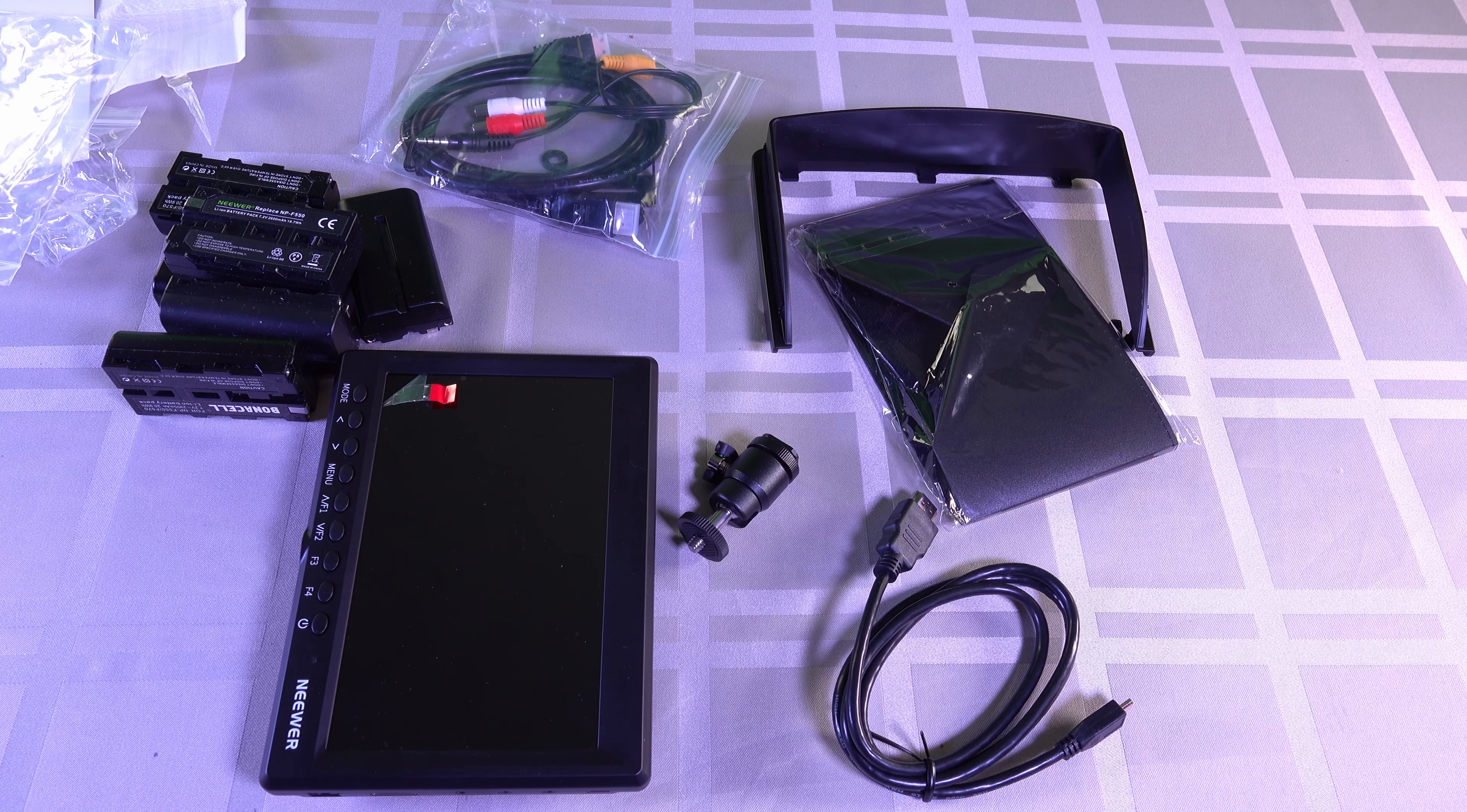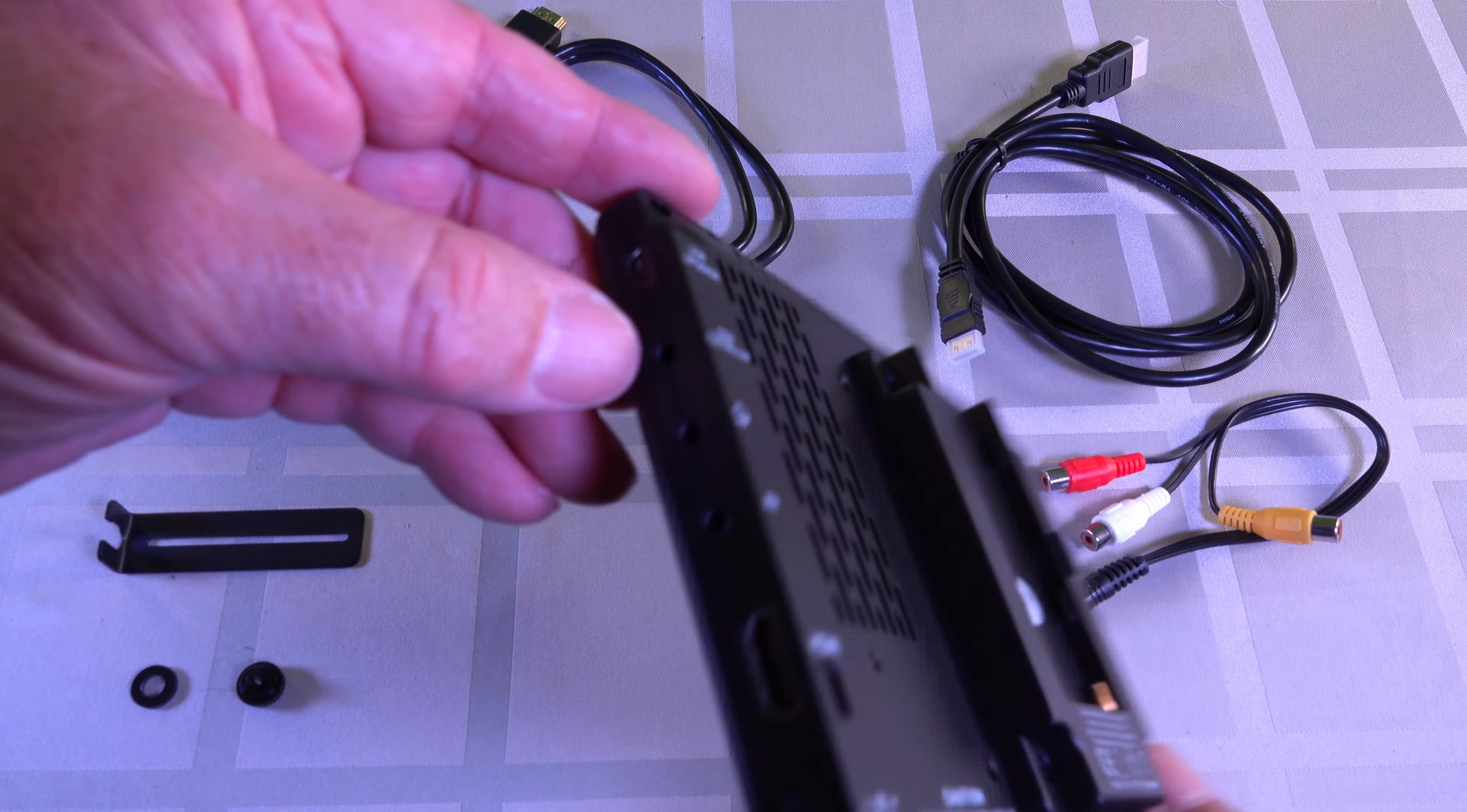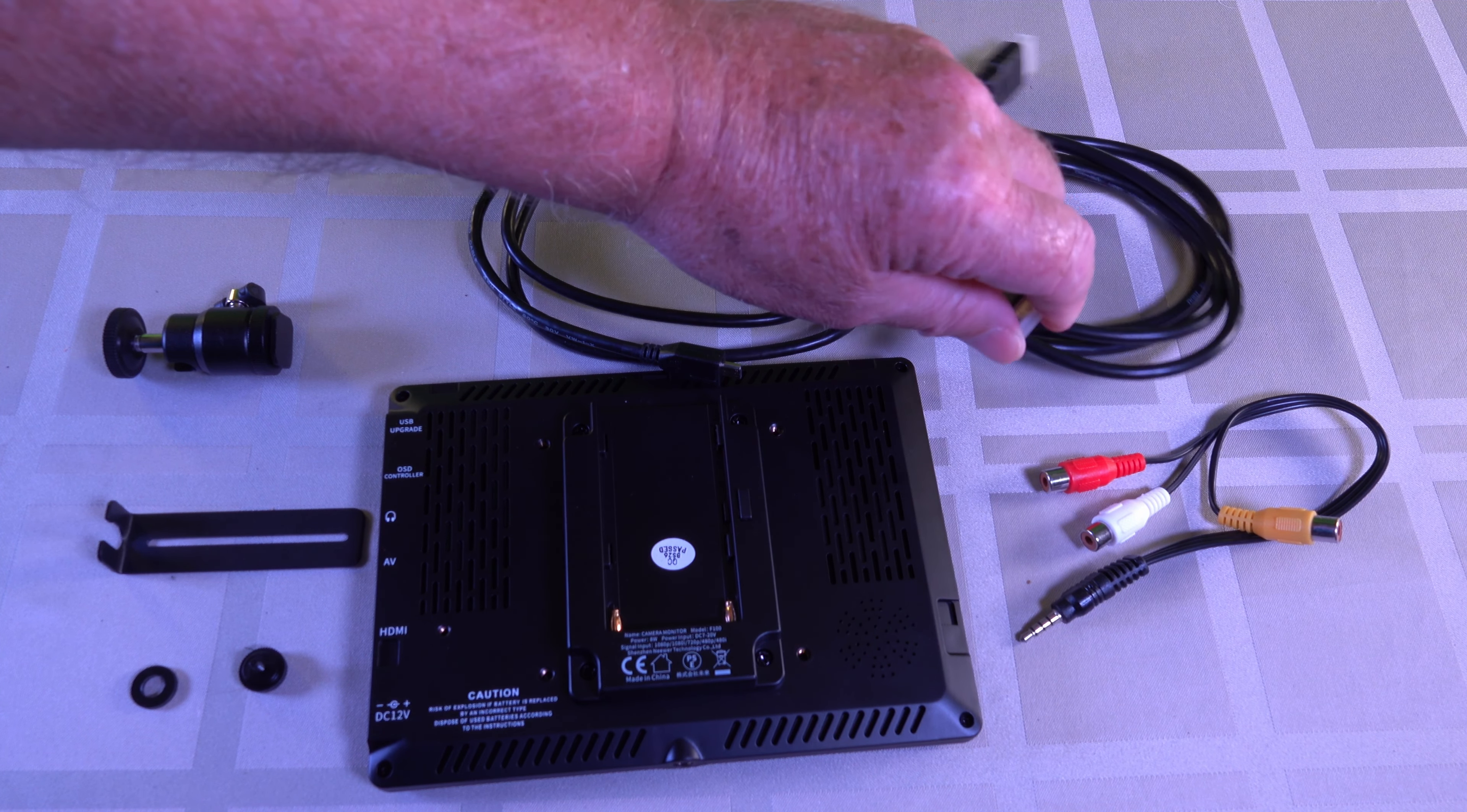I've got everything laid out on the table. We'll turn the monitor over and have a look at it. It's nicely laid out, you've got a speaker on this side, various jacks along the side. Top one says USB upgrade, next one down is an OSD controller, you've got a headphone jack, AV out, HDMI cable connector that's a mini one, and DC 12 volt so you can run it to mains or the battery itself. Two cables, the micro and this one is the mini, they're both HDMI cables.